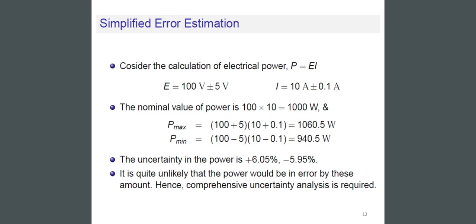So the nominal value of power is 100 × 10 = 1000 W. P_max = (100+5)(10+0.1) = 1060.5 W, and P_min = (100−5)(10−0.1) = 940.5 W. Therefore the uncertainty in the power is +6.05% or −5.95%.